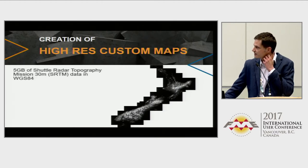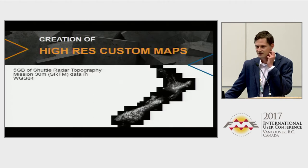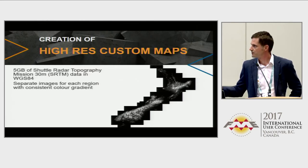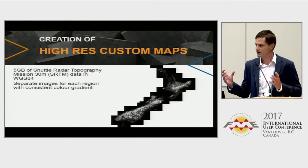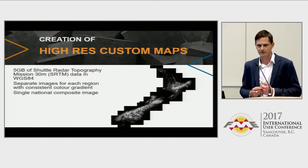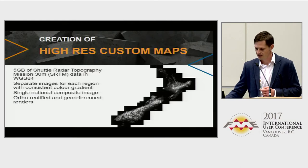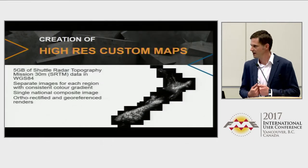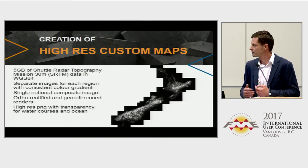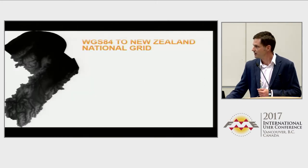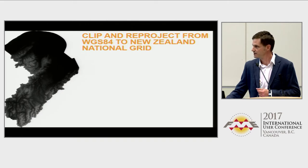The brief was to take a large amount of SRTM data — about five gigabytes to cover all of New Zealand — and produce separate images for each region with a consistent color gradient throughout, plus a single composite image for the whole country at very high resolution. It also had to be completely geo-referenced and orthorectified, which Blender doesn't support natively — but using FME you can geo-reference the output renders. They also wanted everything that wasn't land to be transparent, so I needed FME to create masks for water features and coastline.